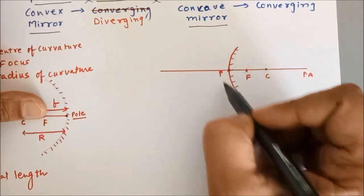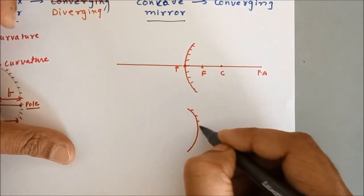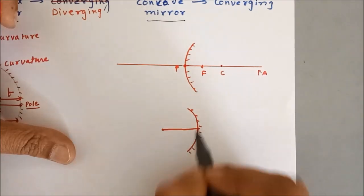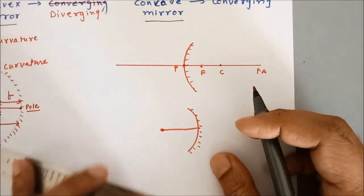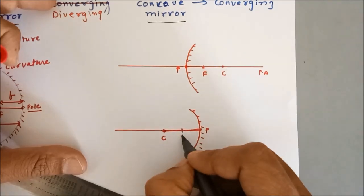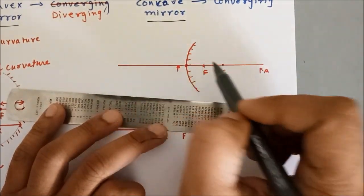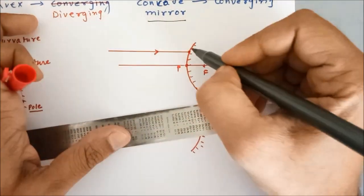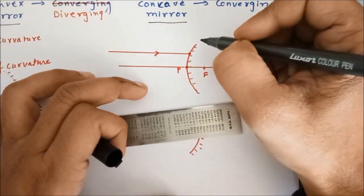Now let us understand why concave and convex mirrors are called converging and diverging. Here I have drawn a concave mirror. If I complete the circle I get the centre of curvature C, the principal axis, the pole P, and the midpoint as focus F. If a ray of light strikes this mirror parallel to the principal axis, this is the point of incidence. Even though it is a curved mirror, the laws of reflection will always be obeyed.